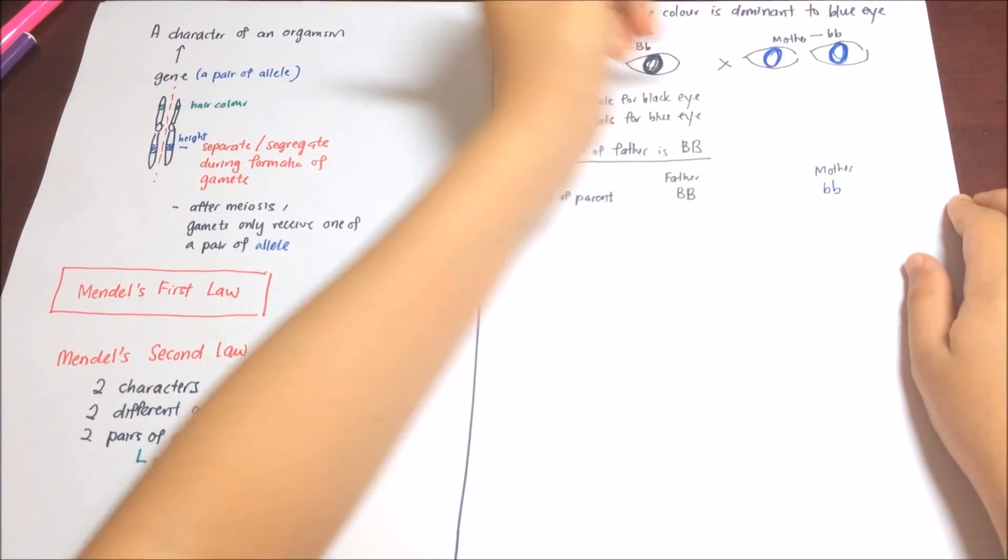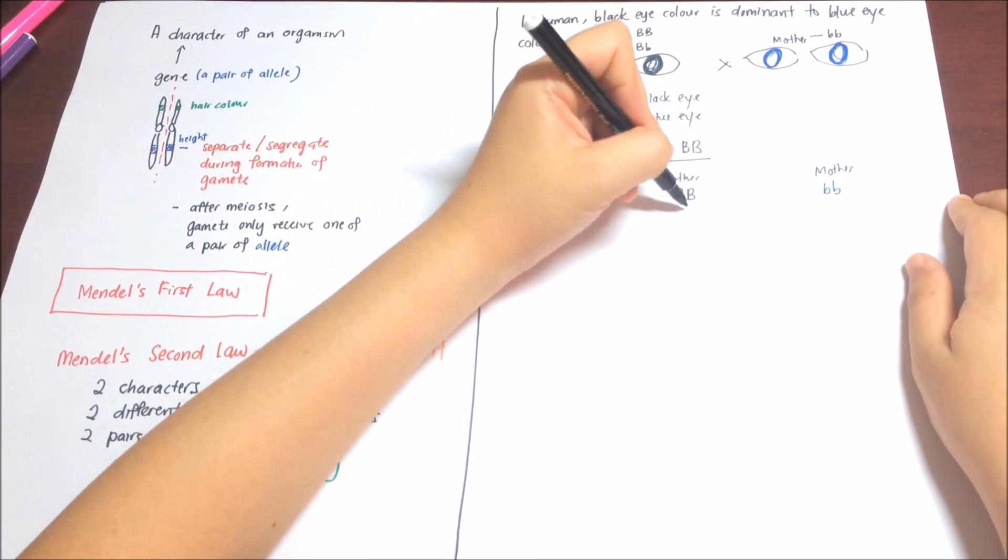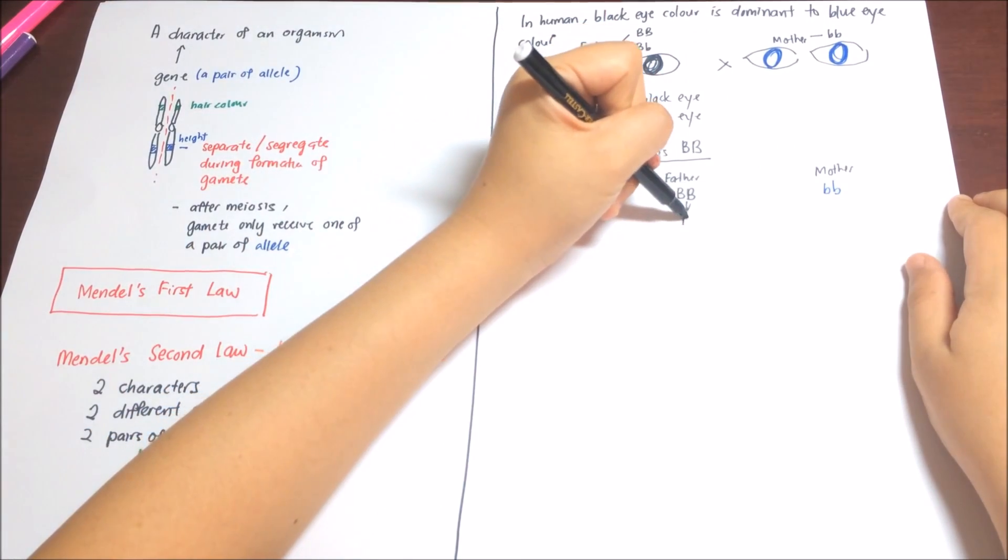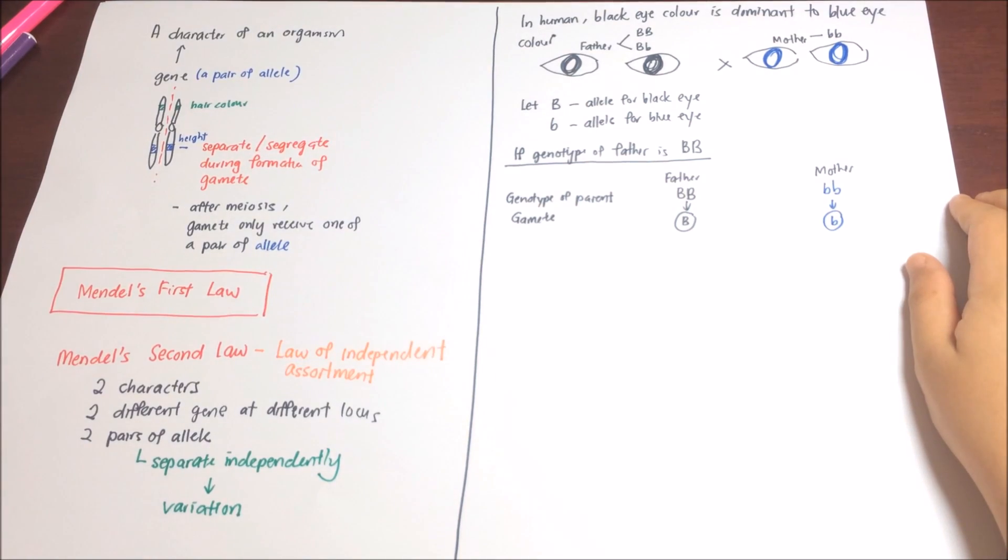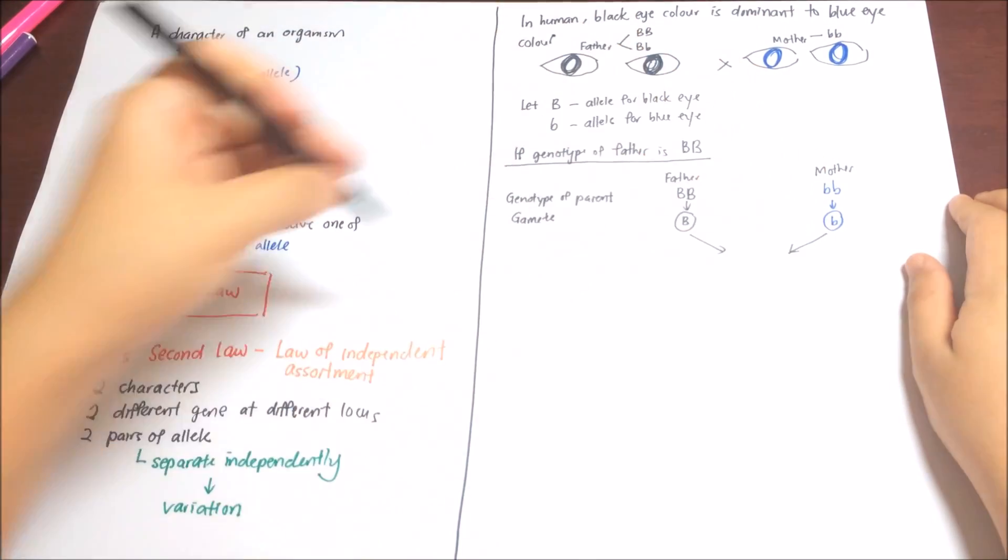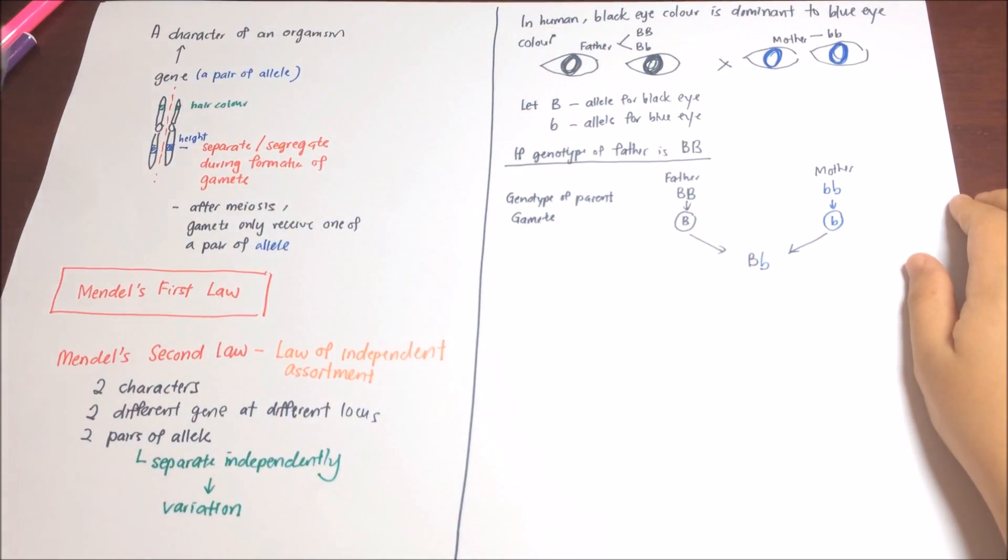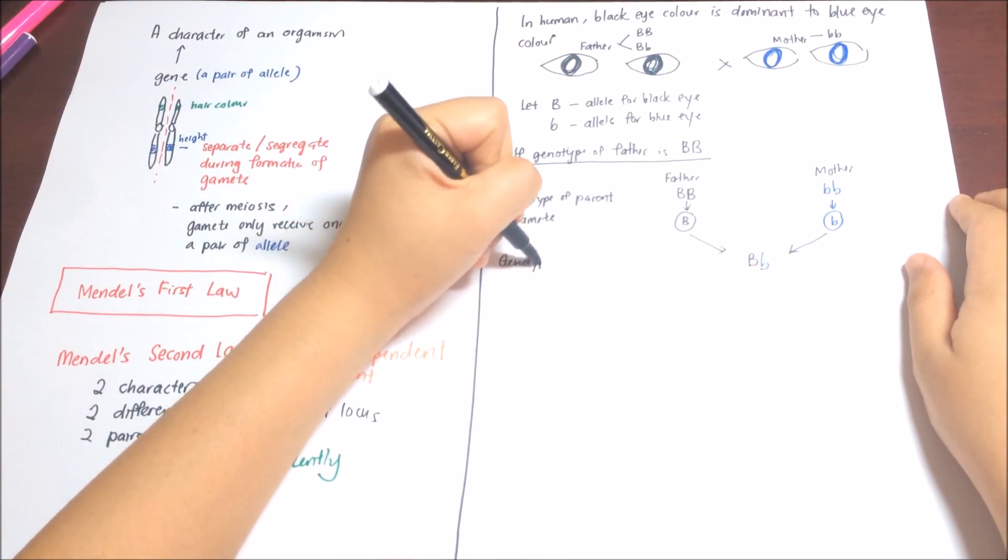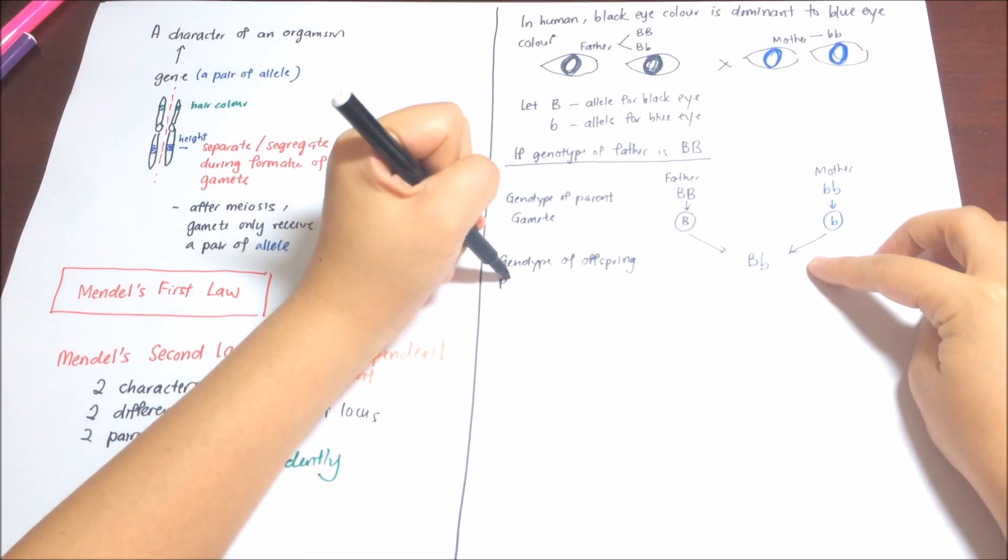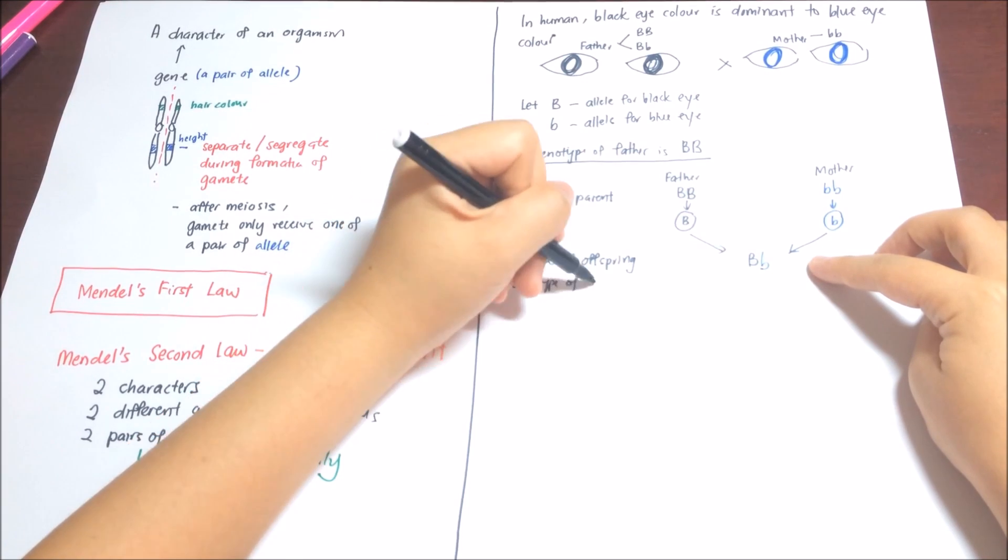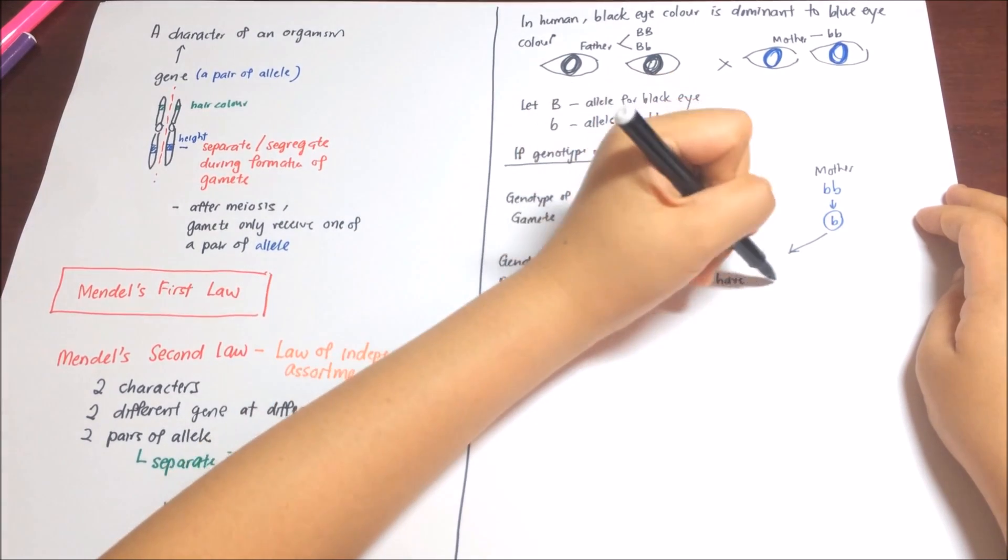Let's work on the possibility if the genotype of father is homozygous dominant. Remember, Mendel's first law says that gametes will only receive one of the allele. So, the gametes produced by the father is capital B, and for the mother is recessive b. Then, during fertilization, when two gametes form together, there will be a heterozygous dominant. And hence, the phenotype of the offspring is black eye.